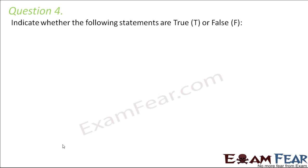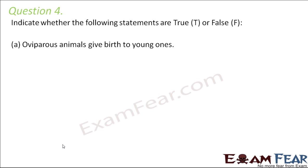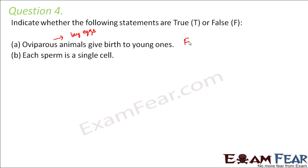Question number 4: Indicate whether the following statements are true or false. Oviparous animals give birth to young ones — this is false, because these animals lay eggs. Each sperm is a single cell — yes, that is true. That is why we say sperm cells; each sperm is made up of one cell.